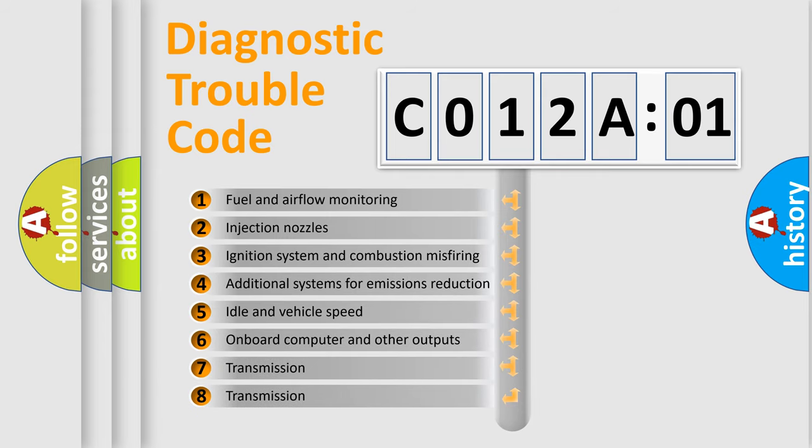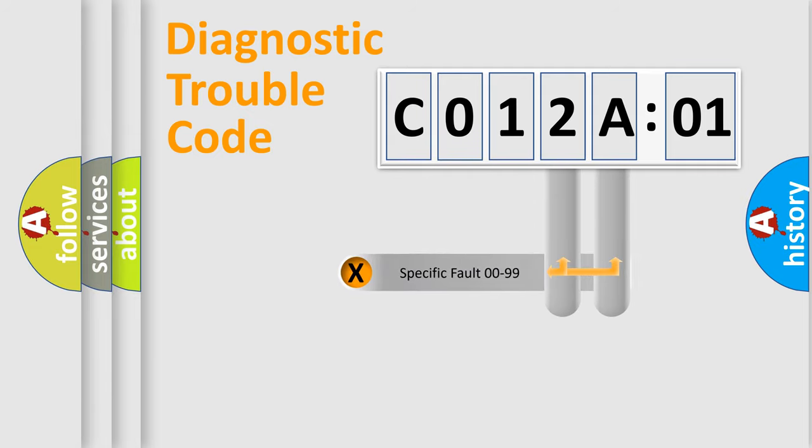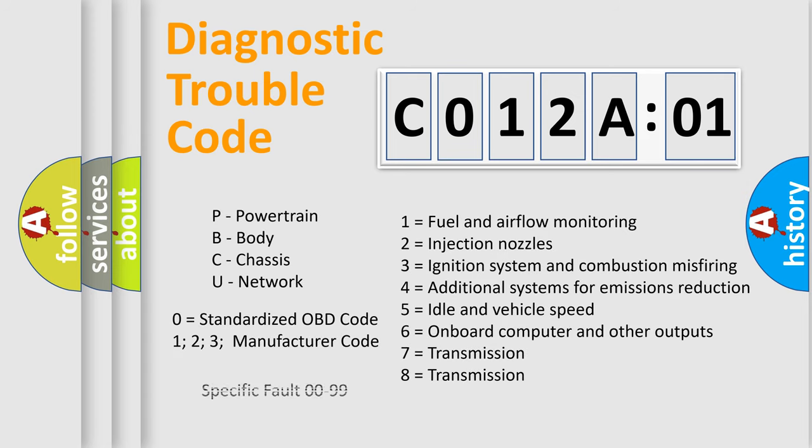The third character specifies a subset of errors. The distribution shown is valid only for the standardized DTC code. Only the last two characters define the specific fault of the group. The add-on to the error code serves to specify the status in more detail, for example, a short to the ground. Such a division is valid only if the second character code is expressed by the number 0.